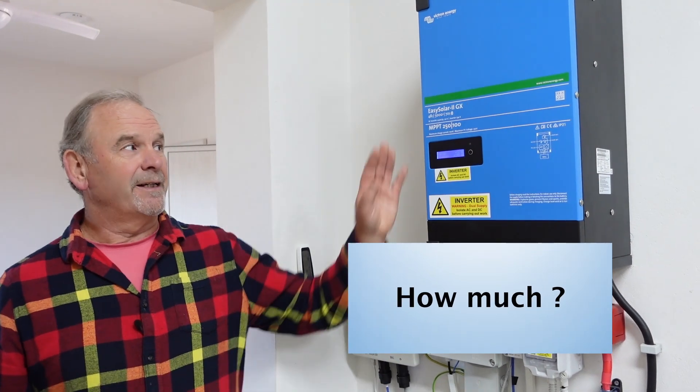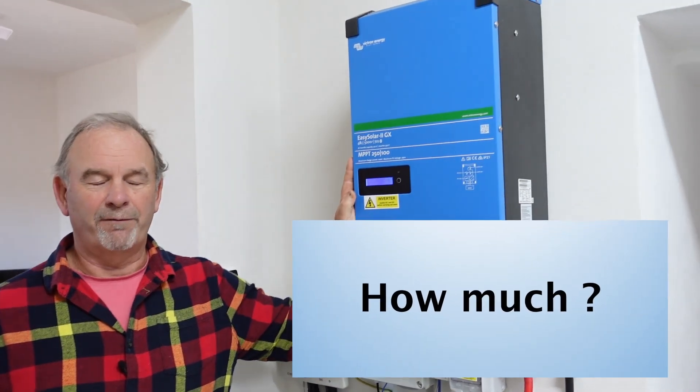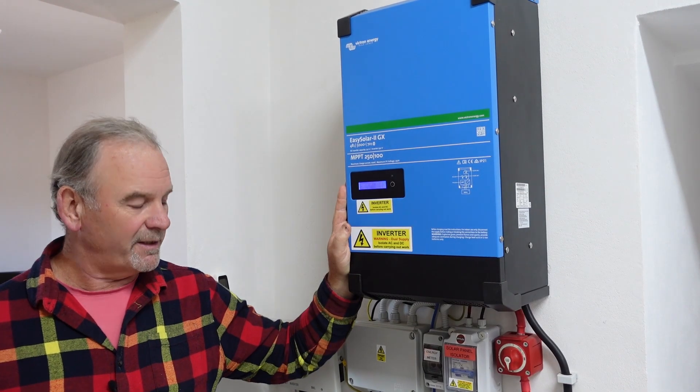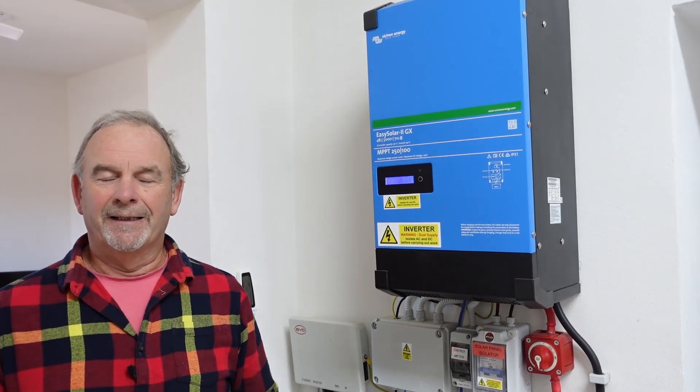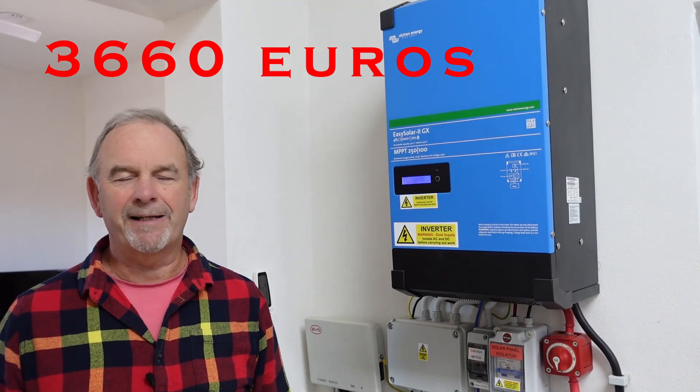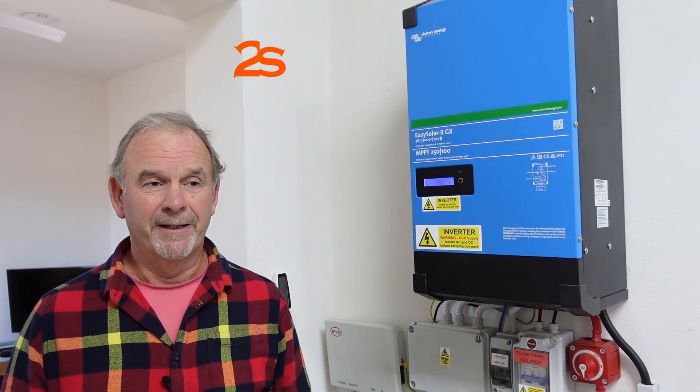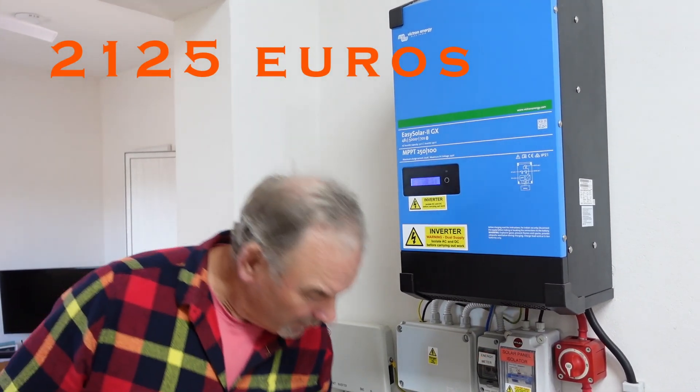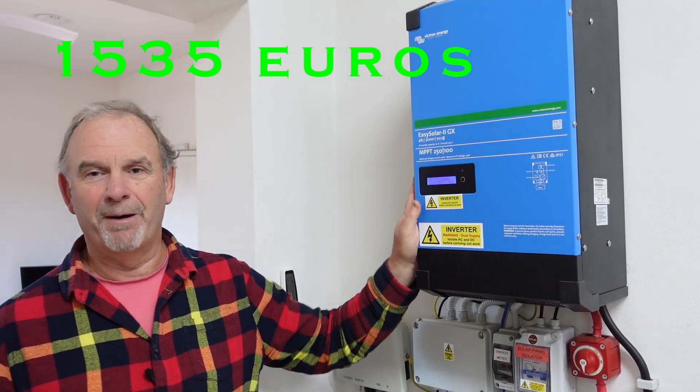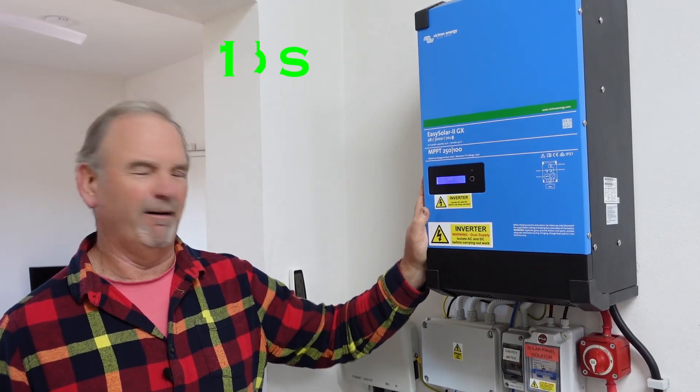The heart of our system is the Victron Easy Solar GX 48 5000 GX system. When I tried to find this in Italy, the best I could do from an Italian supplier was 3,660 euros. I found a company in Holland called E-tronics and got it from them for 2,125 euros delivered, saving 1,500 euros compared to buying in Italy.